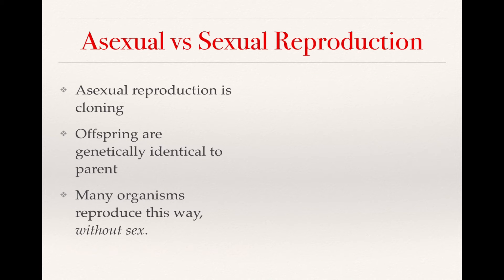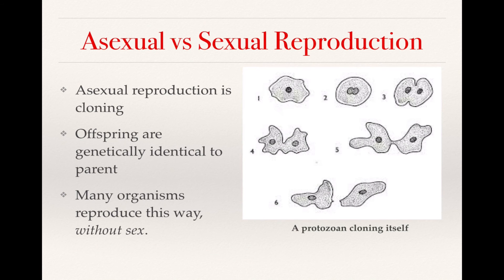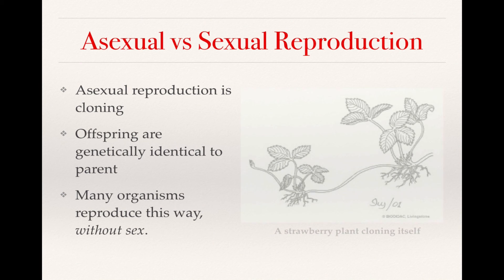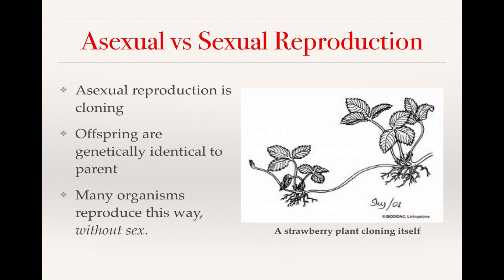Asexual reproduction is another name for cloning — the offspring are all genetically identical to the parent, and many organisms reproduce this way without sex. For example, a simple protozoan can literally pull itself apart; before it divides, it duplicates its nucleus — this is plain old mitosis. Plants can also do this: grasses and weeds spread by growing body parts that develop into whole new plants, which is another example of asexual reproduction, sometimes called vegetative reproduction.